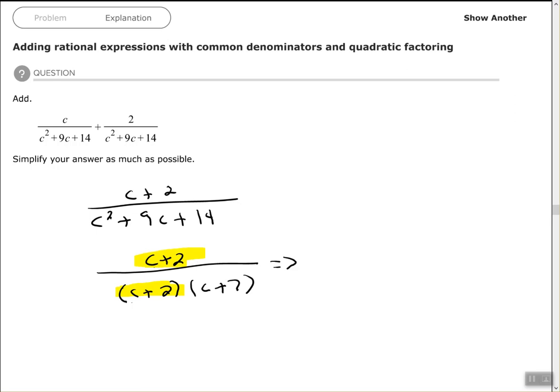So since they cancel each other out, that leaves me with no factors in my numerator, so I have to put a 1 there. So it's understood: 1 all over c plus 7. So if you can factor and simplify, then you have to factor and simplify.